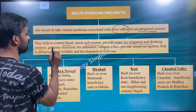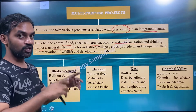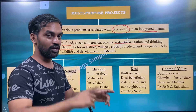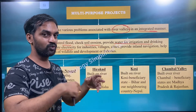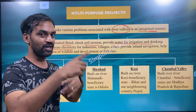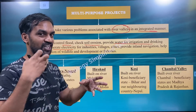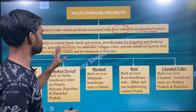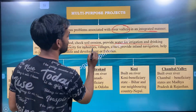They provide water for drinking purpose and generate electricity. When you put a dam on a wheel or a dynamo, the wheels are turned and the dynamo generates electricity for industries.